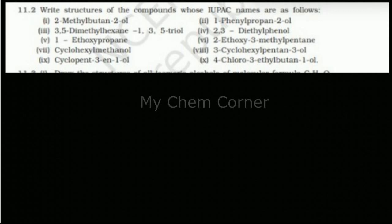The last video was about writing IUPAC names for given structures — this is going to be the other way around, where the names are given and you're going to draw the structure. The first one is 2-methylbutane-2-ol. Whenever you get a name like this, it's important to identify which is the parent hydrocarbon. Here the parent hydrocarbon is butane-2-ol.